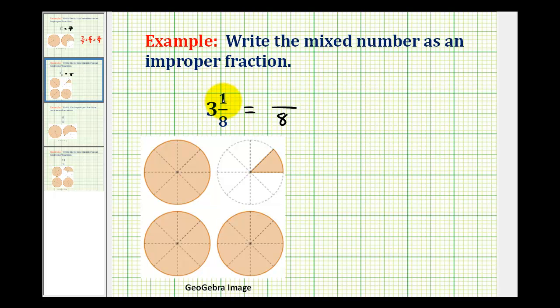Eight times three equals twenty-four, plus one, equals twenty-five. Three and one-eighth is equal to twenty-five-eighths.